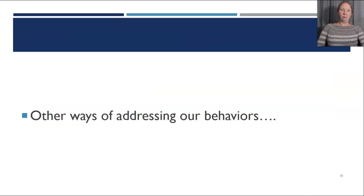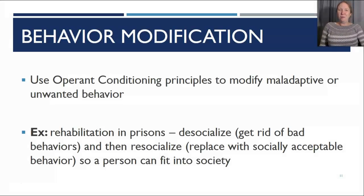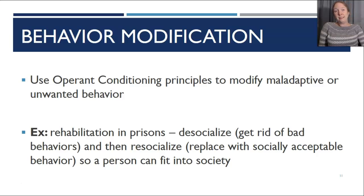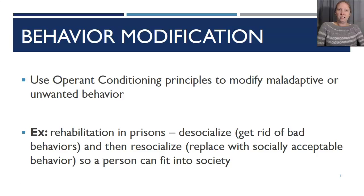Two additional topics fit here at the end of the unit. First, behavior modification — programs that use operant conditioning principles to modify maladaptive or unwanted behaviors. This can happen in classroom or therapy settings. One specific example is rehabilitation programs in prisons, where psychologists work to de-socialize bad behaviors and re-socialize prisoners with socially acceptable behaviors so they can fit into society. For example, prisoners might earn early release time or certain privileges for making good choices.